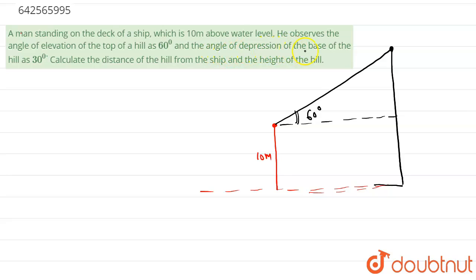And angle of depression at the base of hill is 30 degrees. So basically this is angle of depression which is 30. So if this is 30, according to alternate angle theorem, it also becomes 30 degrees. So this is the diagram we have to deal with.